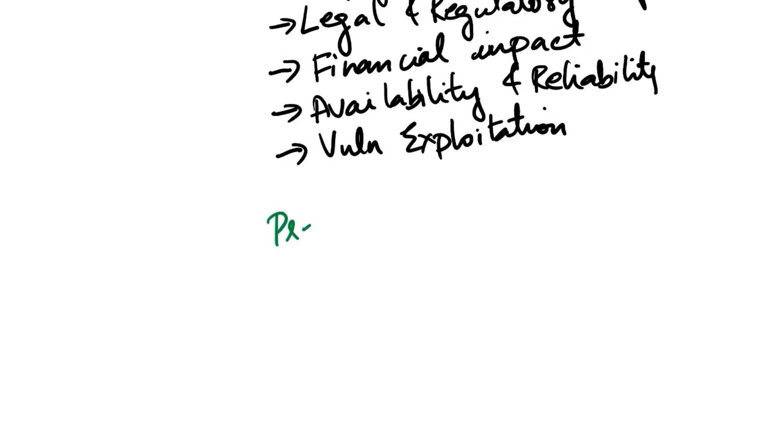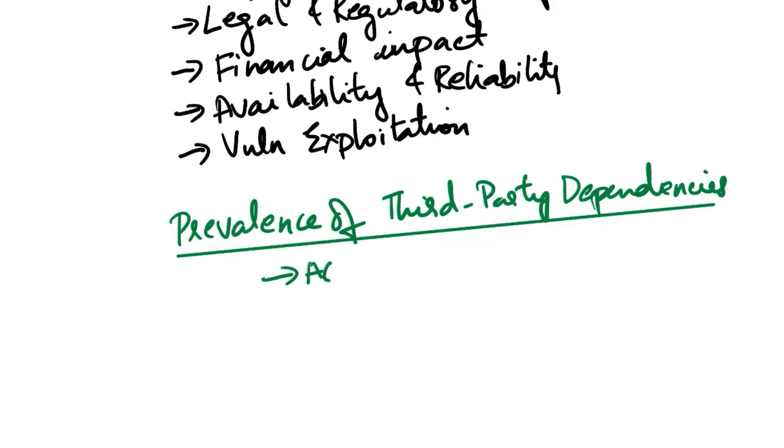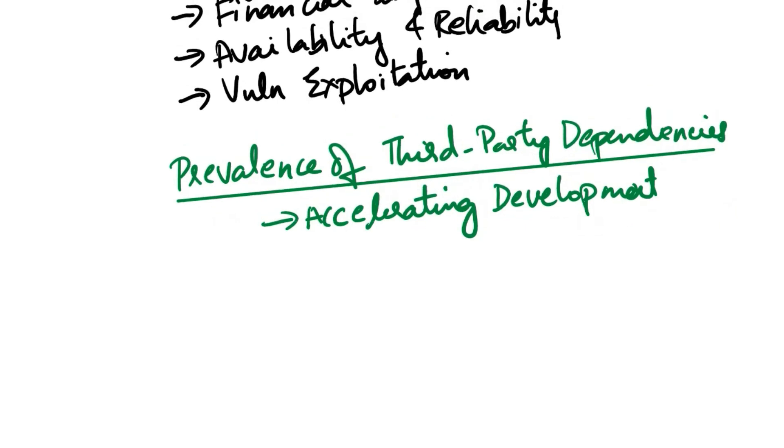Next, we'll see the reason for widespread presence of third-party dependencies. First reason is accelerating development. Third-party libraries, frameworks, and components allow developers to leverage pre-built solutions, saving time and effort in software development.